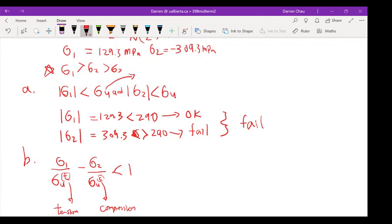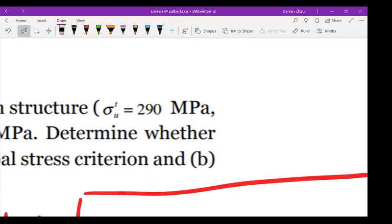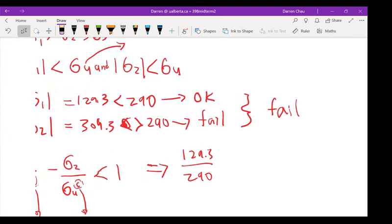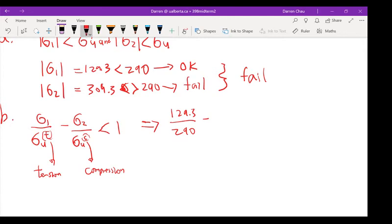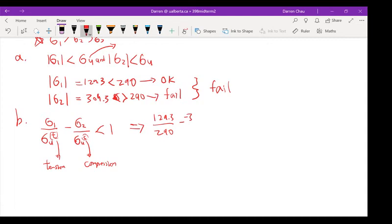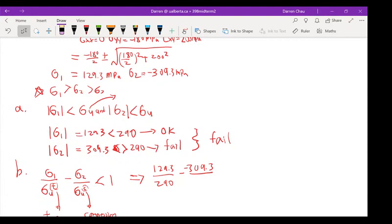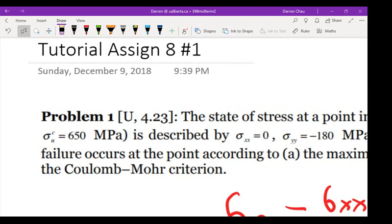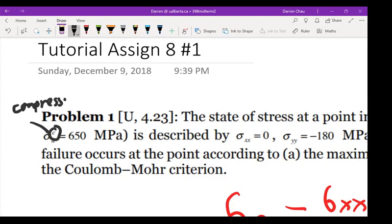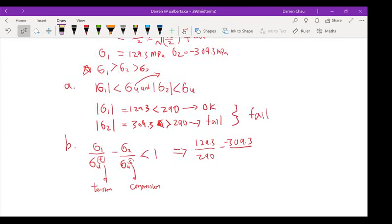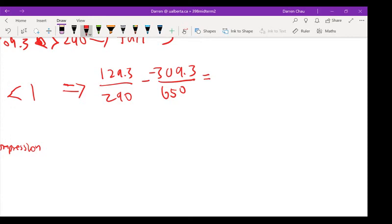To see if it's smaller than 1. If it's smaller than 1, it means it's not going to fail. So let me just plug in all those numbers: 129.3 divided by 290 (where 290 comes from, the ultimate stress in tension which is 290) minus negative 309.3 divided by 650 (the ultimate stress in compression is 650).